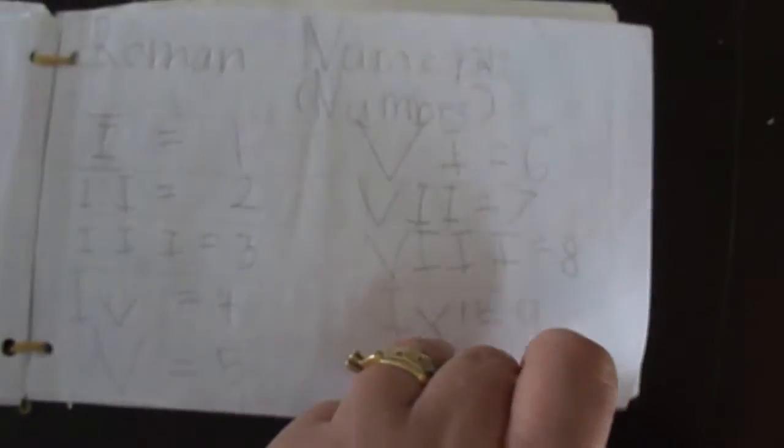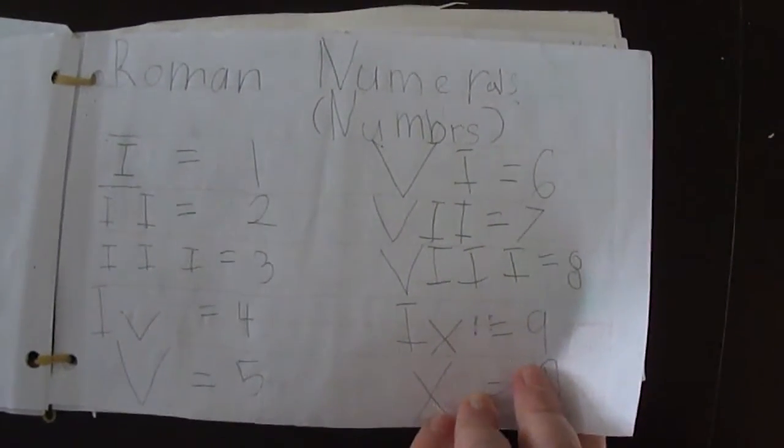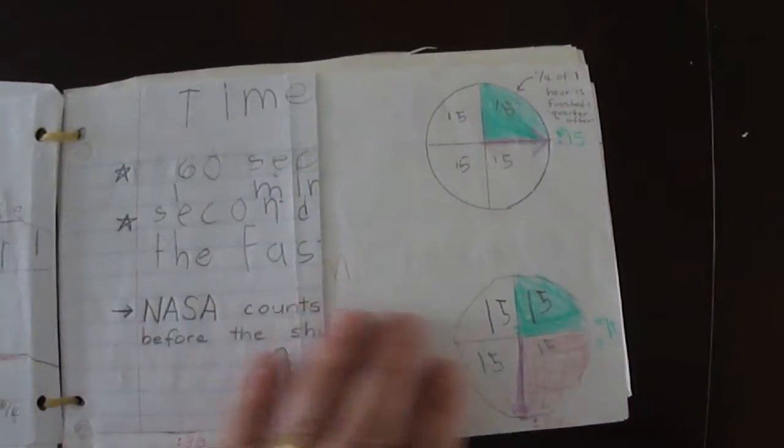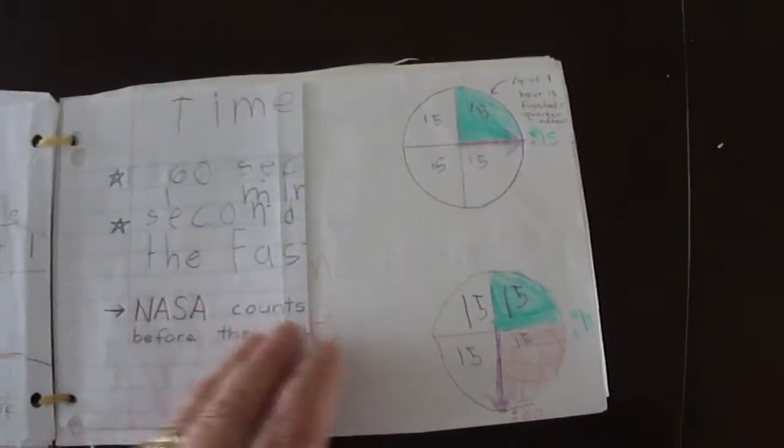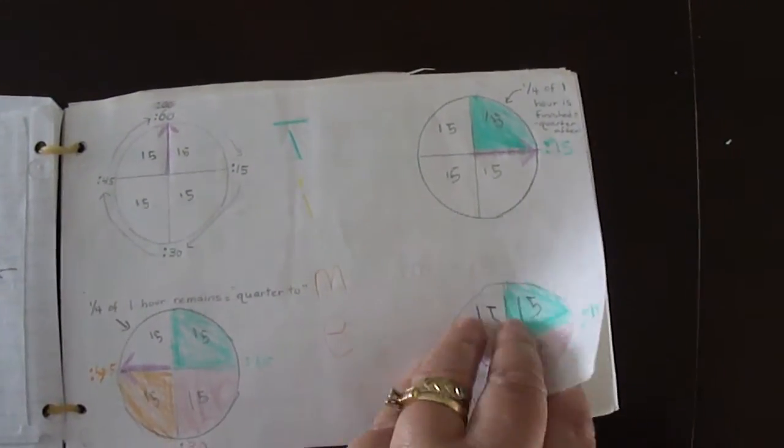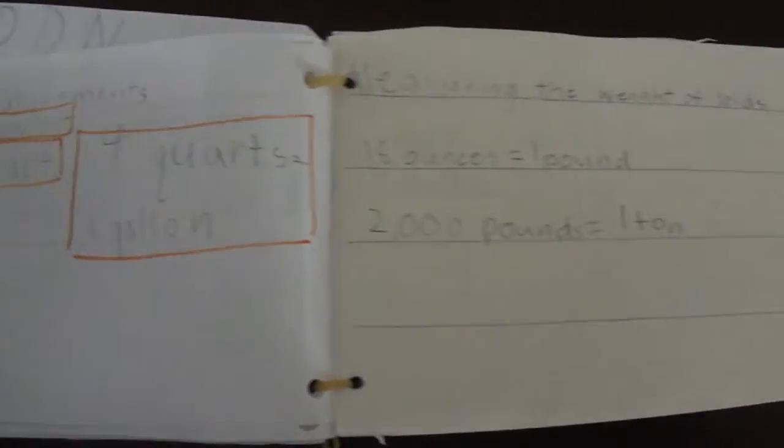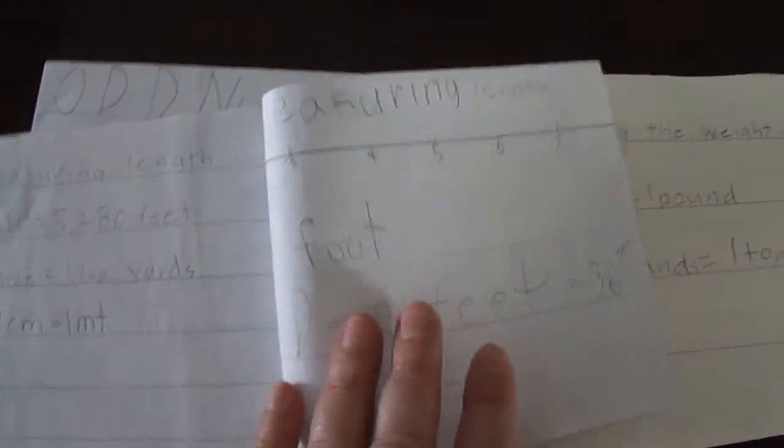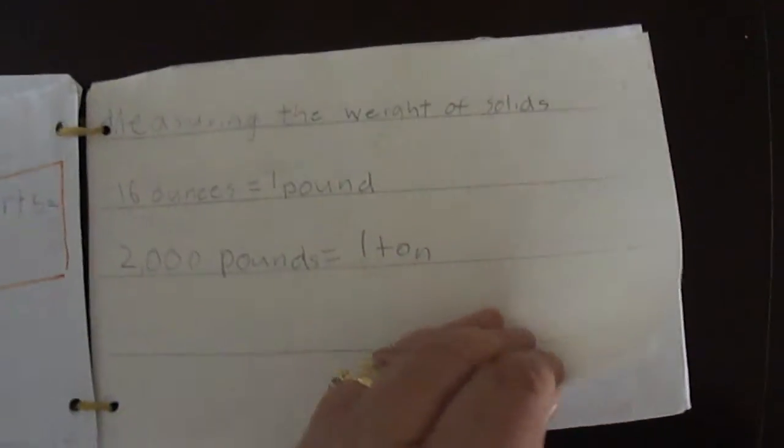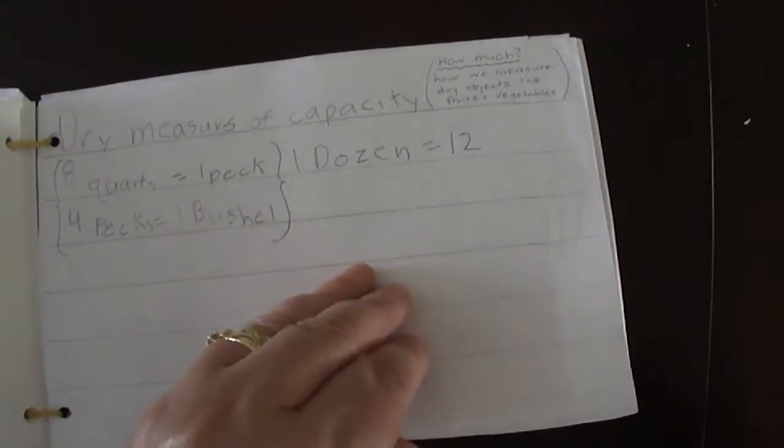Her roman numerals do come up again in fourth grade, and if you forget what L and C mean, you're going to be in trouble. Word problems—you're going to need to know how many seconds and things like that are in a minute. This is where the hard part comes in and where we use this mostly: measuring length, how many feet are in a mile, how many quarts are in a gallon, how many pounds are in a ton. We come back to that quite a bit.